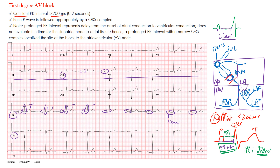In this case, we have that prolonged PR interval, and everything below it continues as it normally would. Think of it as almost a stop sign, but it doesn't completely stop. The QRS complex will always look the same throughout.